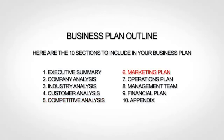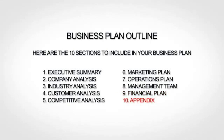The sixth section is your marketing plan, where you lay out your marketing strategy. The seventh section is your operations plan, where you explain how you actually run or will run your business. The next section, the management team, is where you provide bios of your team. The ninth section is your financial plan, where you give financial forecasts. And finally, the tenth and last section is your appendix, where you provide any additional supporting information.